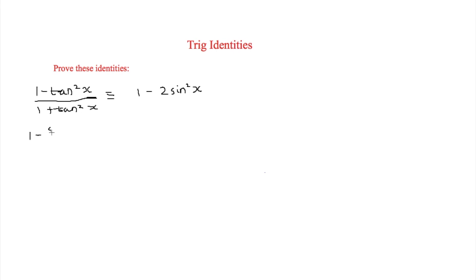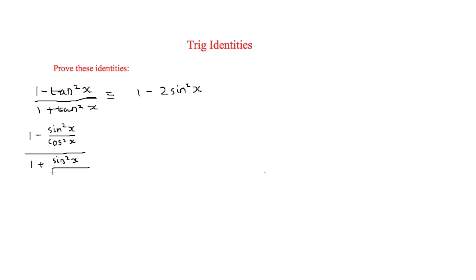So we can change the numerator to one minus sin squared x over cos squared x, all over one plus sin squared x over cos squared x.